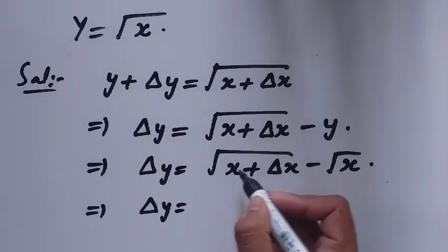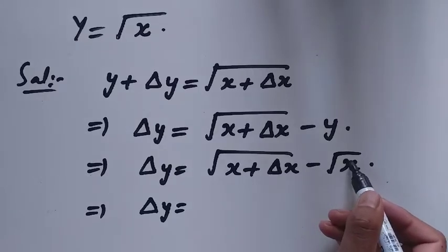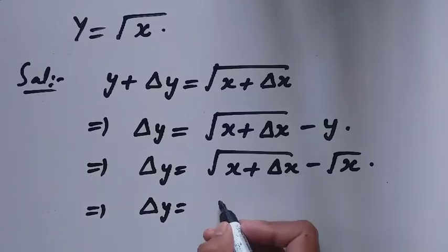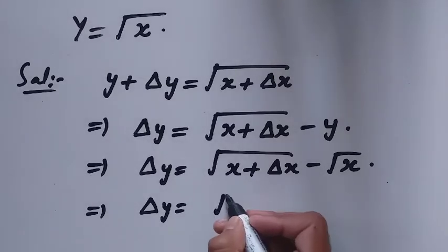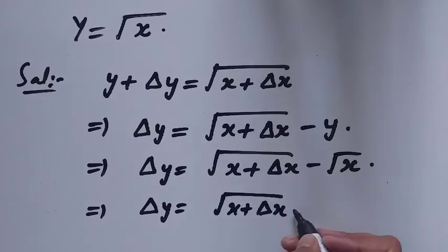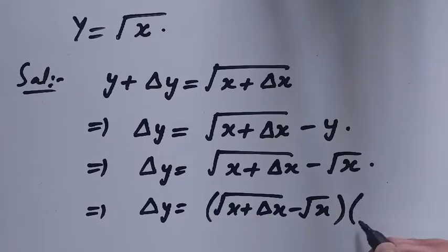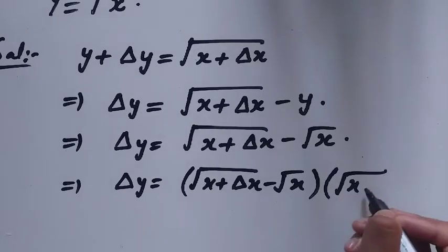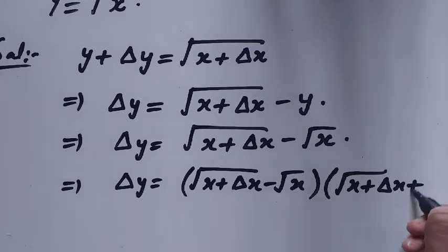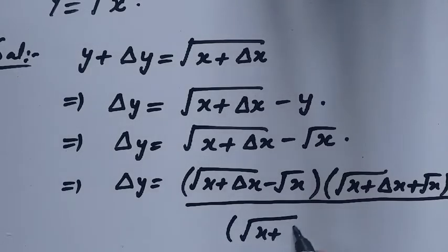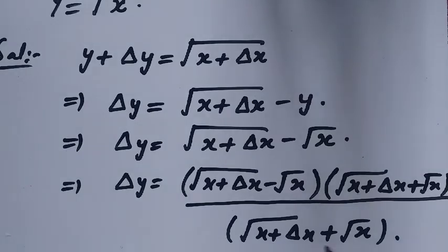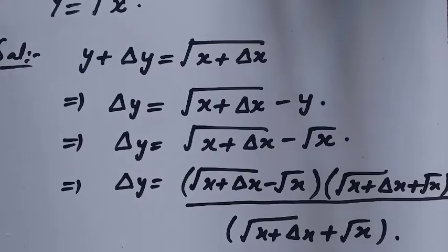So delta y is equal to under root of x plus delta x minus under root of x. Now I will multiply this by the conjugate: under root of x plus delta x plus under root of x, and divide by the same expression. Because we multiply and divide by the same term, this does not affect our equation.